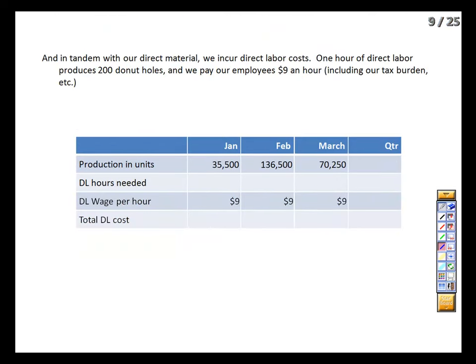Labor is an input just like materials and we can budget for it as well. Given that we can make 200 donut holes per labor hour, and given production needs each month, we can budget our labor. At 200 donut holes per hour, we need 177.5 hours of labor in January. Let's just say all figures are in millions to make us feel better about Davecorp. Including payroll taxes and benefits, the rate is $9 per hour, turning into about $1,600 in labor costs in January. We double up shifts in February to meet the production goal — about 682 hours for $6,100 — then roughly 350 hours in March for about $3,200.